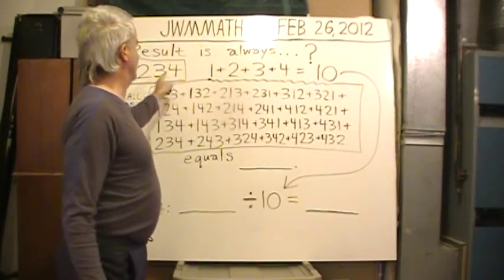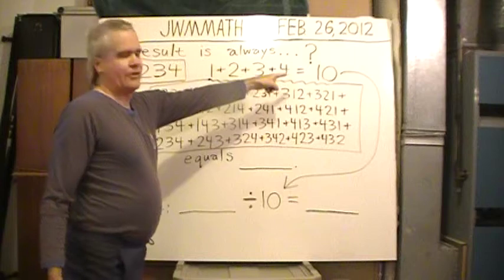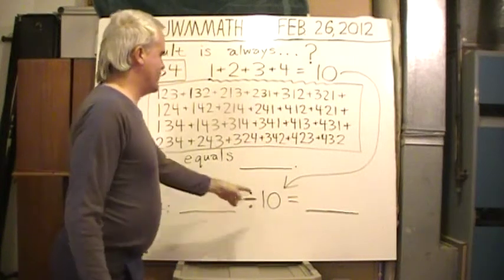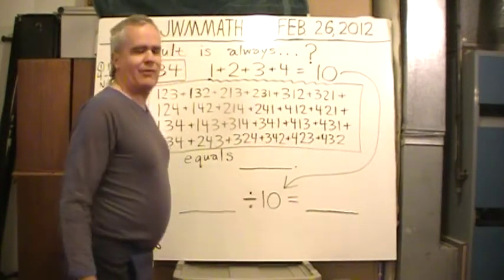Anyhow, add the digits: one, two, three, four. Sum is 10. We'll save that 10. I put it down here on my whiteboard.